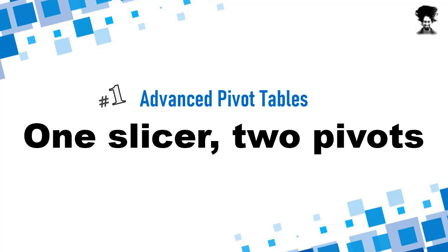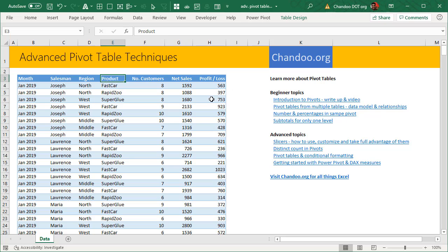Hello and welcome to chendu.org. In this video and the subsequent several videos, we will be looking at advanced pivot table techniques and tricks. The very first technique is 'one slicer, two pivots' — while it says one slicer and two pivots, you can use this technique for one slicer and many pivots. You can check the video description to download a sample copy of all the files used throughout the video series and practice while watching.